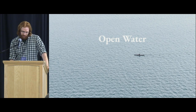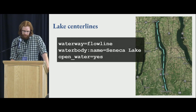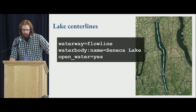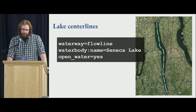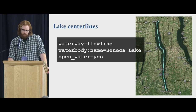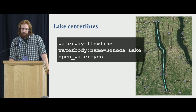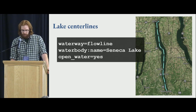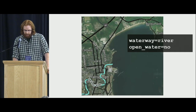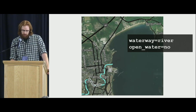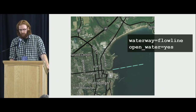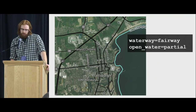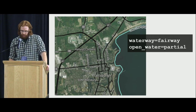Open water I find more terrifying than rapids because it can seem calm and then change at any time. If you have a waterway that flows through a lake, you can say waterway=flowline, add the name as a separate tag so a router can say 'paddle five miles through Seneca Lake,' and use open_water=yes or no to indicate the danger level — whether it's protected by breakwaters or not. Rivers would be open_water=no if relatively narrow; something going into a large body of water would be open_water=yes. Waterway=fairway I've been using to map paths along a lake shore, and you can say open_water=partial because it's protected on one side but not the other.